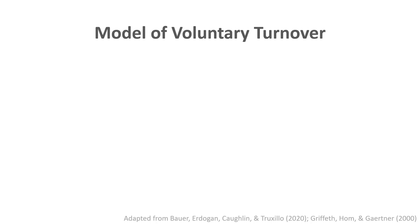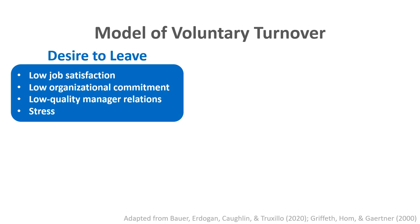When it comes to voluntary turnover, it's helpful to consider an established psychological model, synthesized by Griffith, Holm, and Gartner in 2000. The purpose of this model is to understand the precipitating factors — the antecedents or root causes — of a person's decision to engage in voluntary turnover. The model suggests one antecedent is a person's desire to leave, driven by low job satisfaction, low organizational commitment, low quality manager relations, and higher levels of stress.